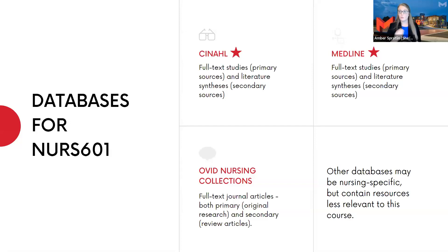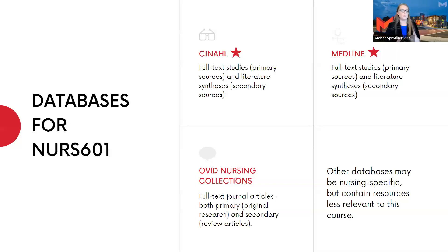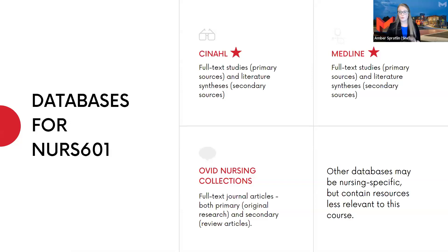MEDLINE has a really solid journal selection. OVID also has excellent nursing journal collections — probably the largest — it does have a slightly different interface, but all of the filters are still there: peer-reviewed filter, date range filter. Other databases may appear in the nursing A to Z list but are not what you need for this course. The systematic review database and Smart Images are examples — there are no academic journals in Smart Images. UpToDate is an excellent resource, but not for this course.